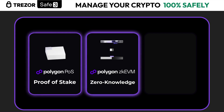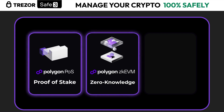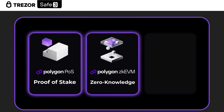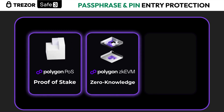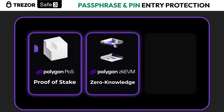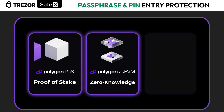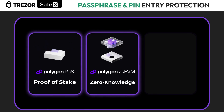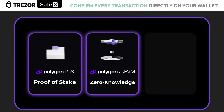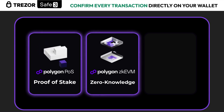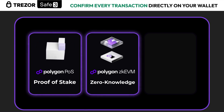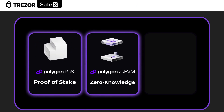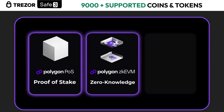The second network is the Polygon ZK Ethereum Virtual Machine. This network uses zero-knowledge technology, which allows the validation of data without revealing it to the network. It can be said that it generates a layer of privacy in transactions.